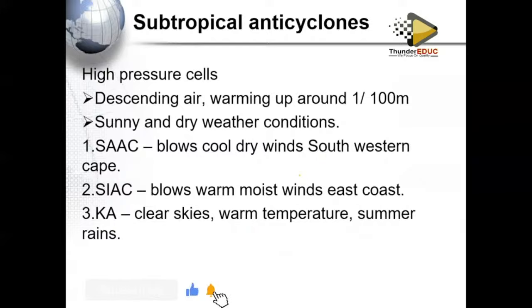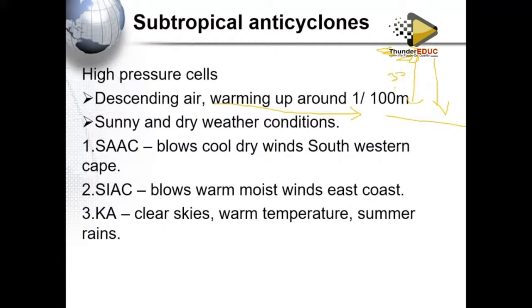So what are the characteristics of these subtropical anticyclones, these high pressure cells? First, air is descending. When air is descending it warms adiabatically, meaning that every 100 meters the temperatures are increasing by one degree. As it descends to the earth's surface, temperatures increase — say from 20 degrees, to 30 degrees, to 35 degrees — because when it is descending there is compression and friction.